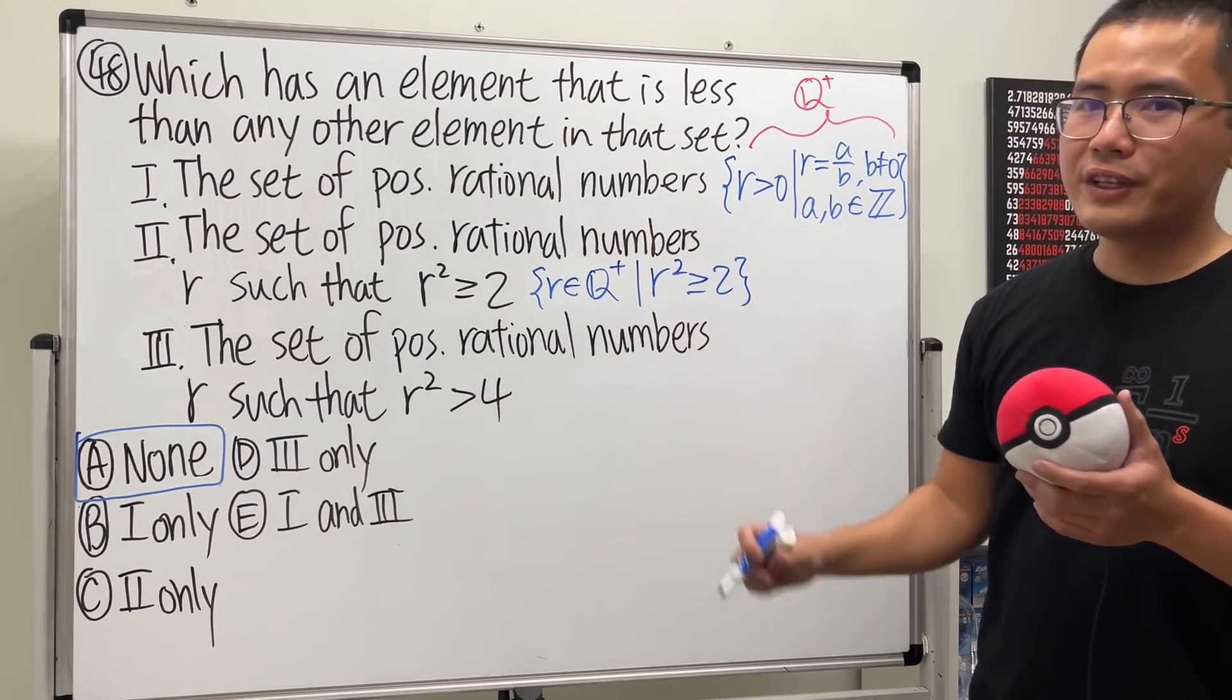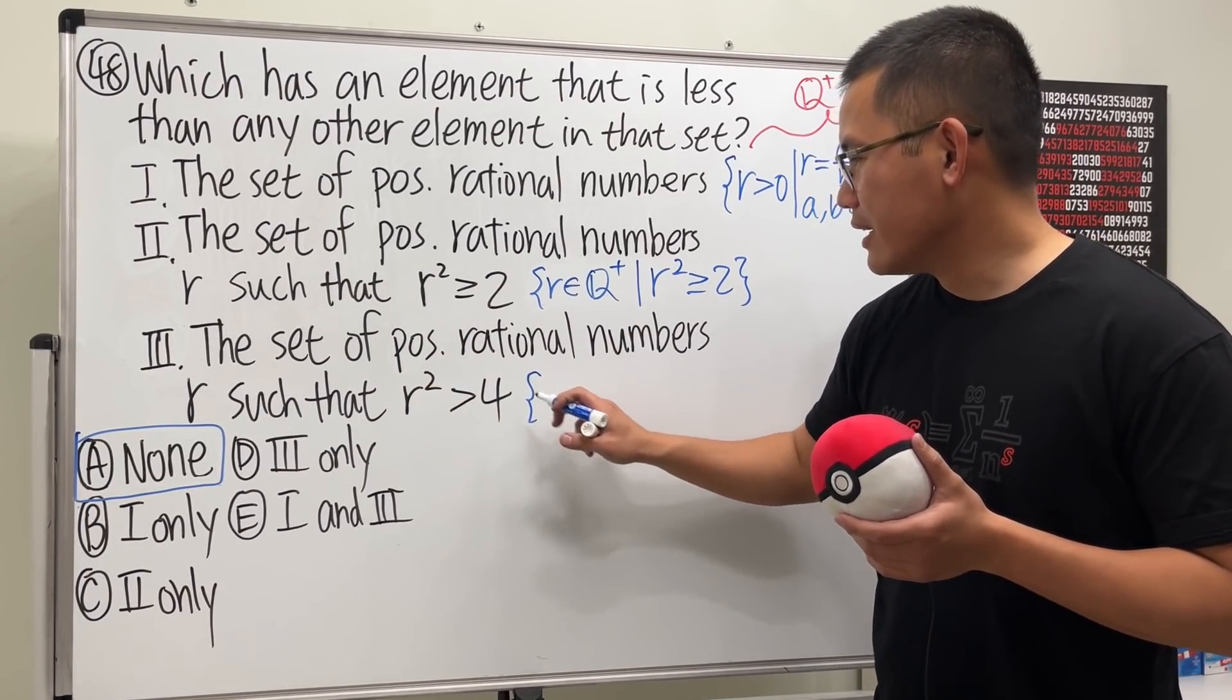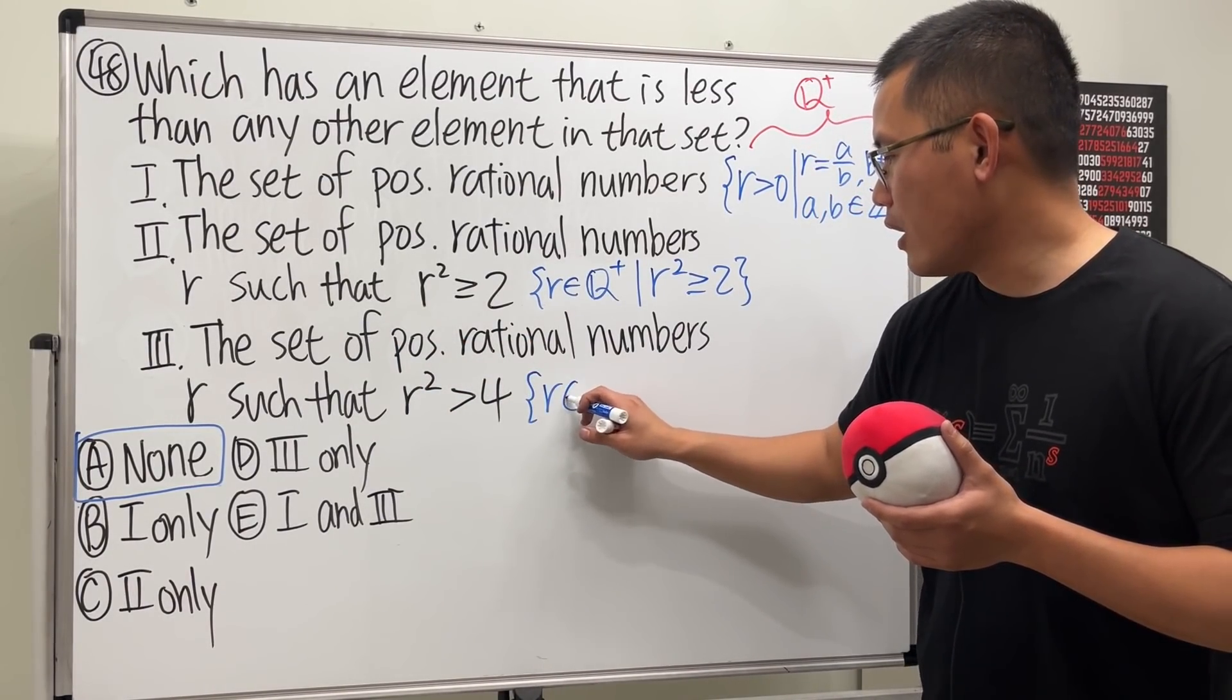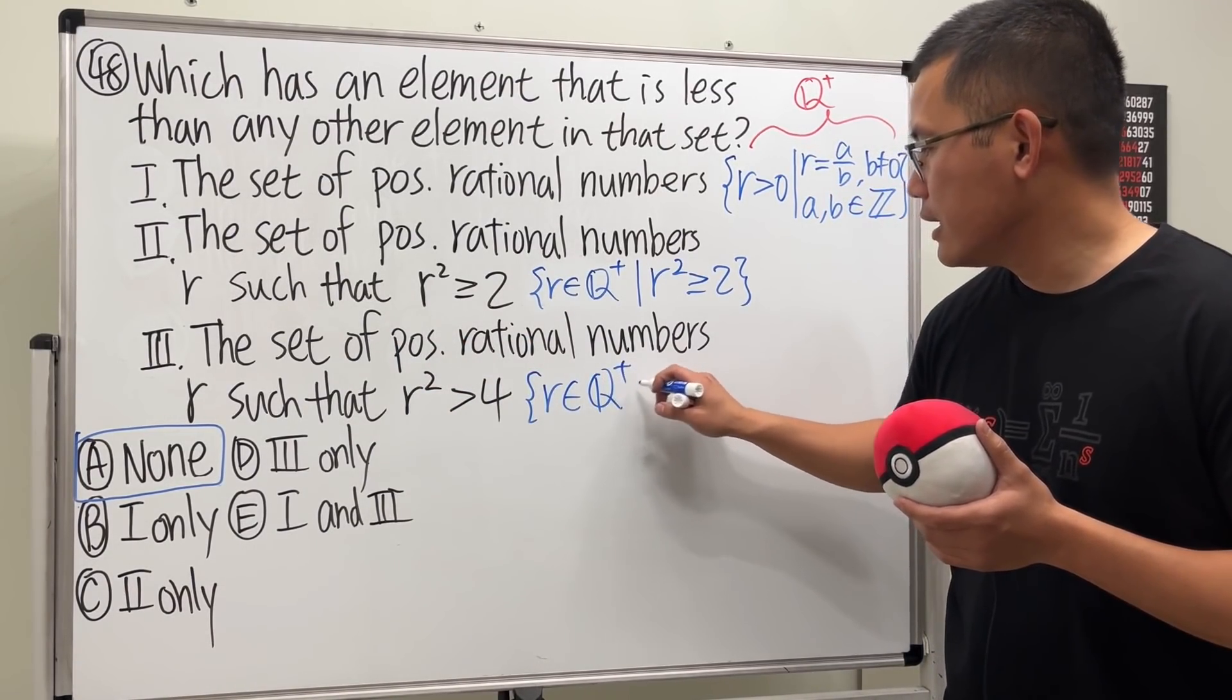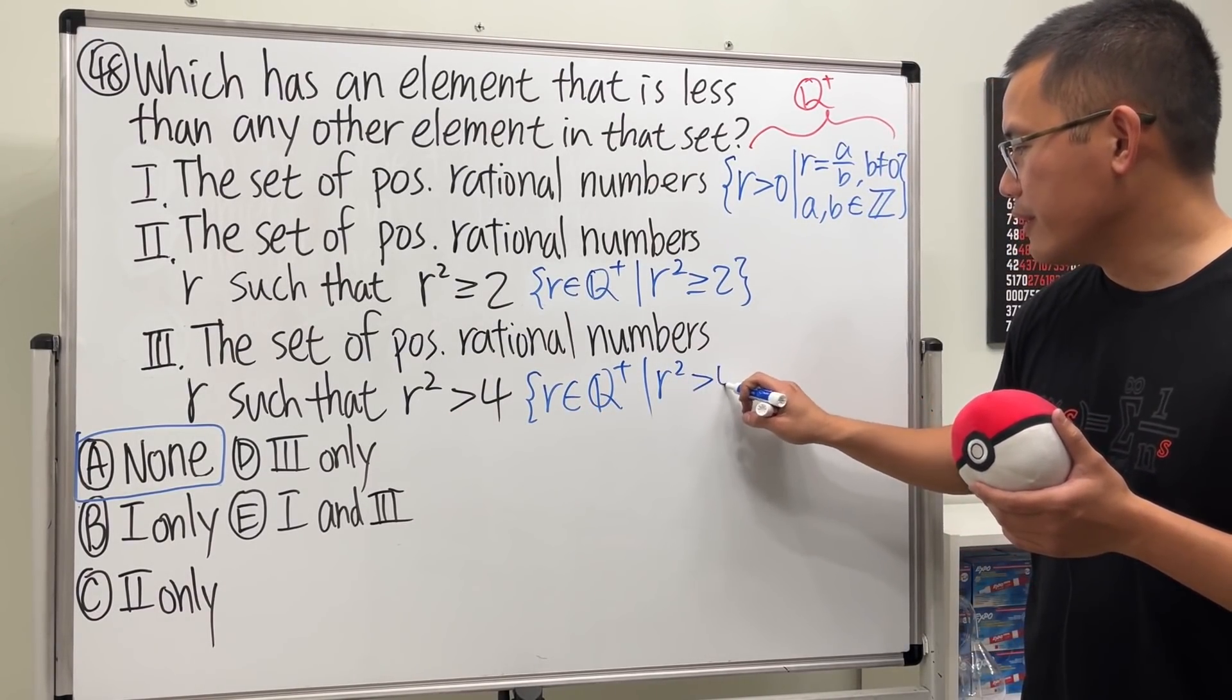So that would be the set builder notation for that. And then the third one, we want the set again positive rational numbers, so r belongs to Q plus such that we want r squared to be greater than four.